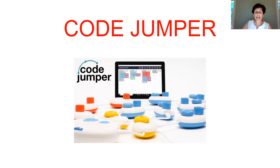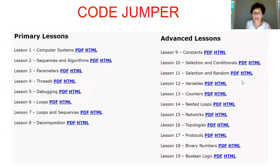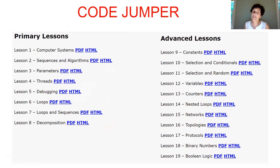What's really impressive about Code Jumper is that it's fully accessible and hands-on — there are knobs and dials to program, or you can use the screen. The lessons are phenomenal and teach students honest-to-goodness coding and computer science topics at a very introductory level. Topics include: sequence and algorithms, parameters, debugging, loops, counters, binary numbers, and constants — all at a K through 5 level. Everything is written out very clearly and you would need no coding knowledge to jump into this.